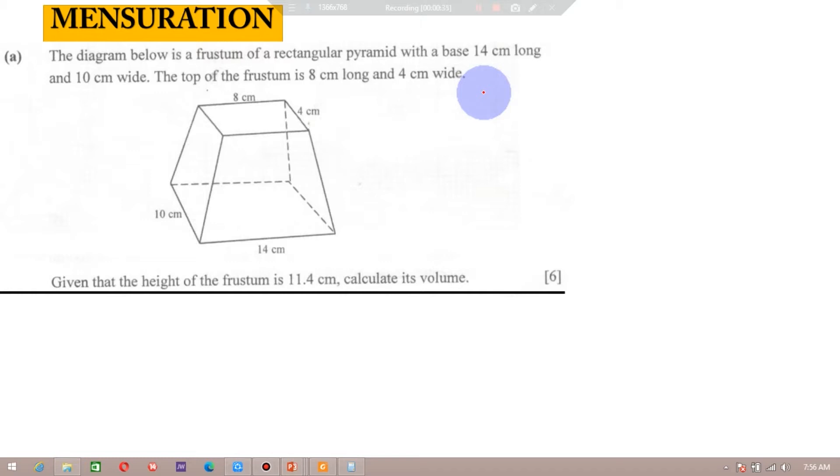We said the first thing you're supposed to do is check for your base. There are only two possible options: either a frustum of a pyramid with a square base or a rectangular base. In our first video we used a frustum with a square base. In this case, if you look at our question, it's saying a rectangular pyramid, so the base is a rectangle.